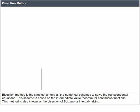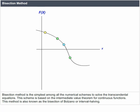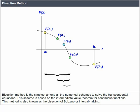Bisection Method is the simplest among all the numerical schemes to solve transcendental equations. The scheme is based on the Intermediate Value Theorem for Continuous Functions. This method is also known as Bisection of Bolzano or Interval Halving.